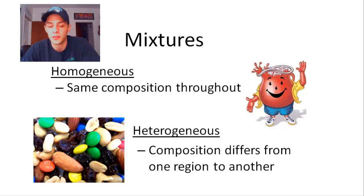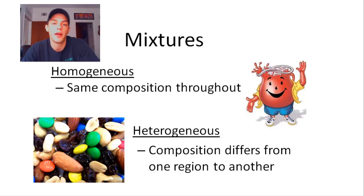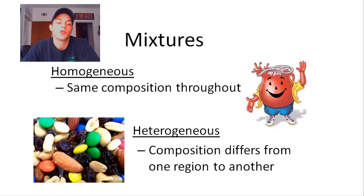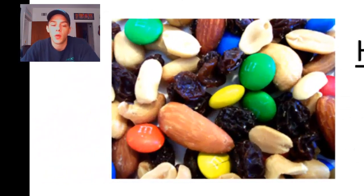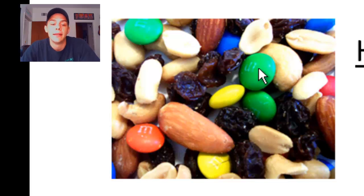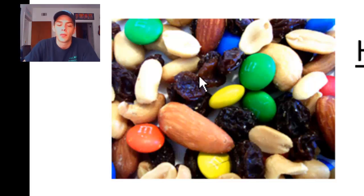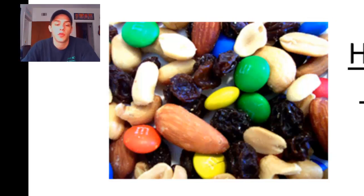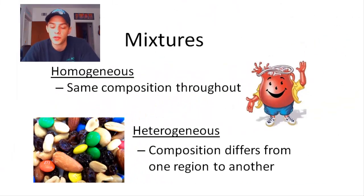In a heterogeneous mixture, the composition of one region of the sample actually differs from another. A good example is trail mix. If I looked at one part of a sample of trail mix, I might see M&Ms and peanuts, and if I looked at another part, I might see almonds and raisins. So trail mix is therefore a heterogeneous mixture.